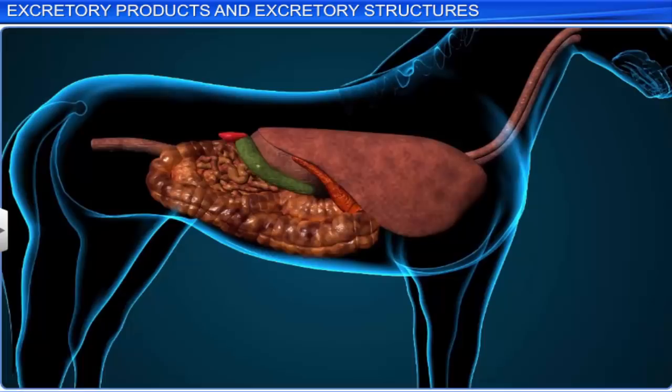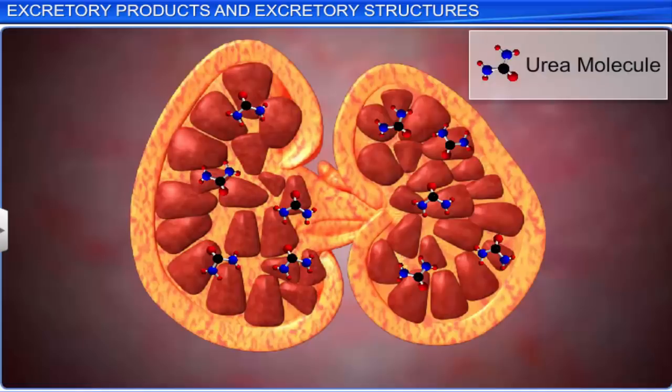However, in some animals, a small amount of urea is retained in the matrix of the kidney to maintain the required osmolarity. In these animals, the liver converts ammonia into urea by the ornithine cycle, and releases it into the blood. The urea in the blood is then filtered by the kidneys and excreted.